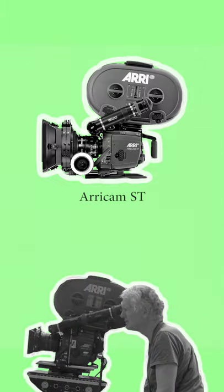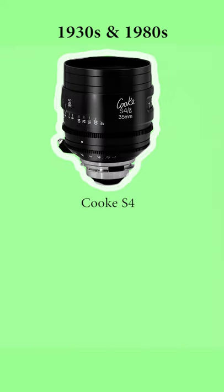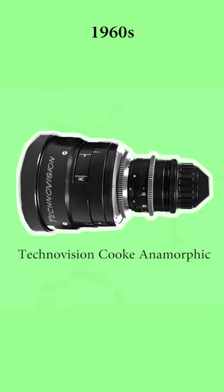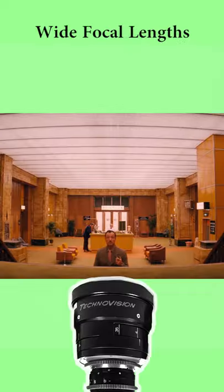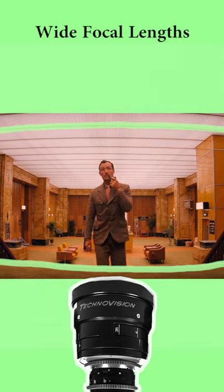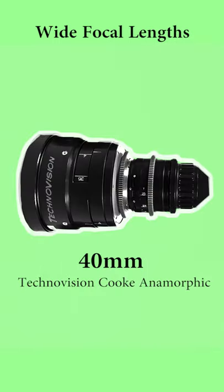This time Yeoman shot an ARRI system with a single ARRI Cam ST paired with Spherical Cook S4s, an Ingenieur Optimo 20-42-90 zoom for the 1930s and 80s, and Technovision Cook Anamorphics for the vintage 1960s look. Again he used mainly wider focal lengths which distorted more around the edges, such as the 40mm Technovision Anamorphic.